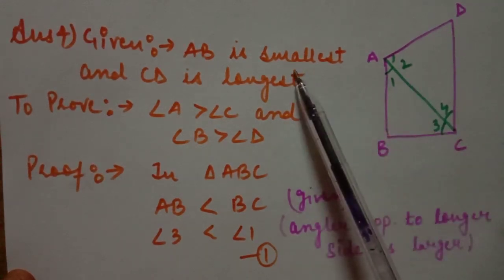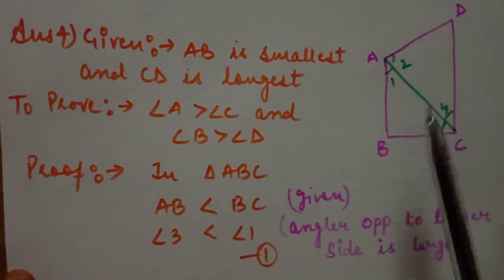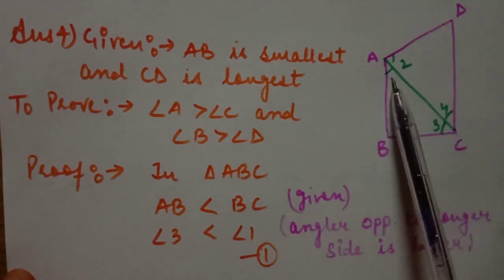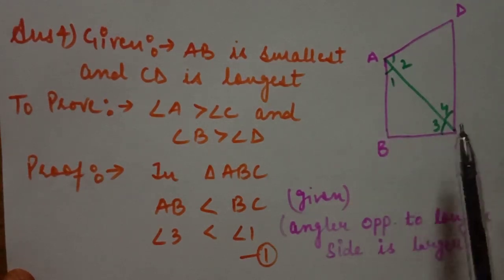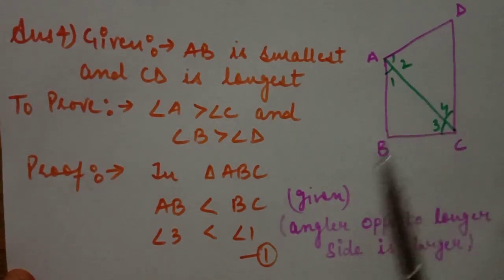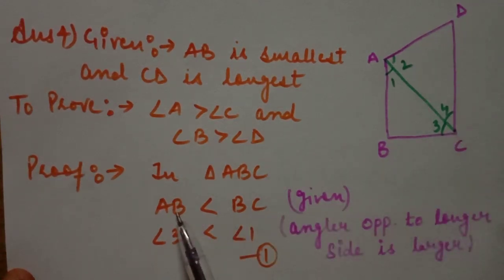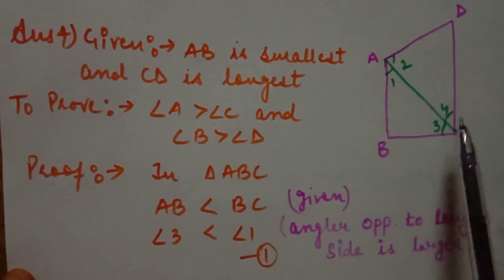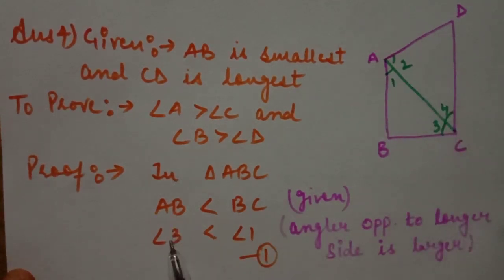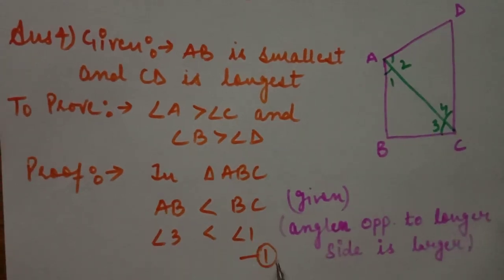In triangle ABC, AB is the smallest side. Angle 1 is opposite to side BC and angle 3 is opposite to side AB. Since AB is less than BC — AB being the smallest side — the angle opposite to AB, which is angle 3, is less than the angle opposite to BC, which is angle 1. So angle 3 is less than angle 1. Reason: the angle opposite to the longer side is larger. This is equation 1.